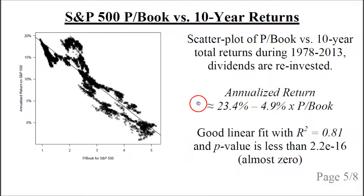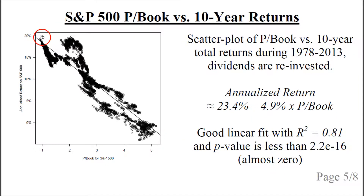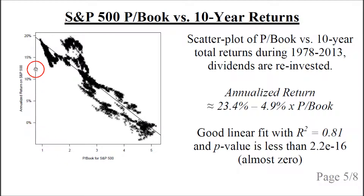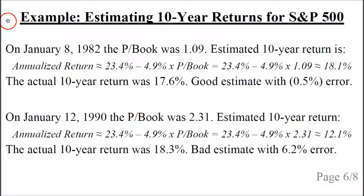This fits much better. The formula for the annualized return is: 23.4% minus 4.9% multiplied by the price-to-book ratio — that is the formula for the straight line shown here. It is a good linear fit with an R-squared of 0.81, and the p-value is very close to zero. Statistically, this means there is a meaningful relation between the price-to-book ratio and the annualized return over the next 10 years of the S&P 500.